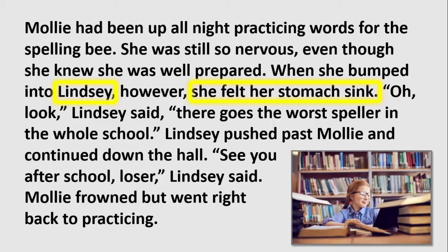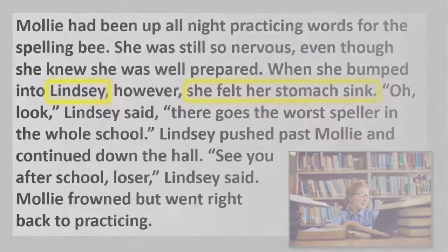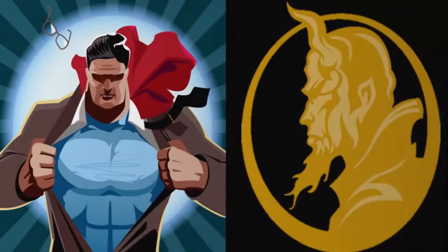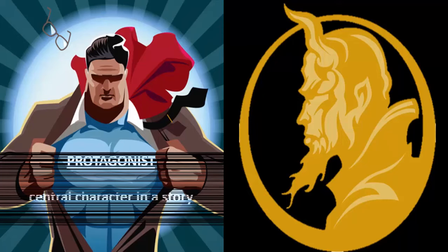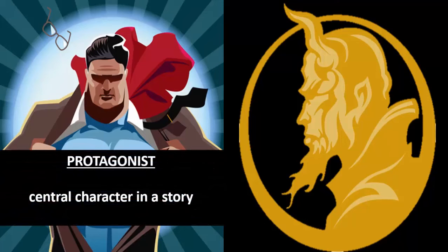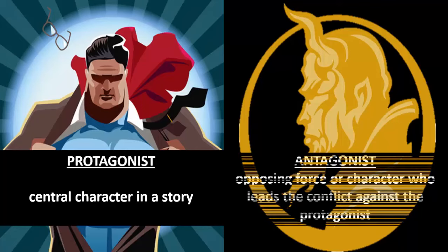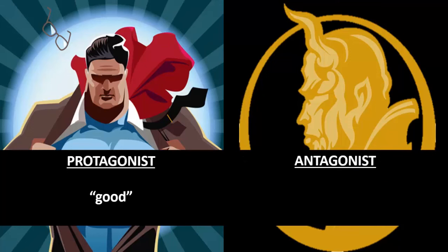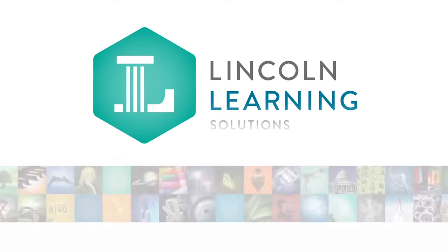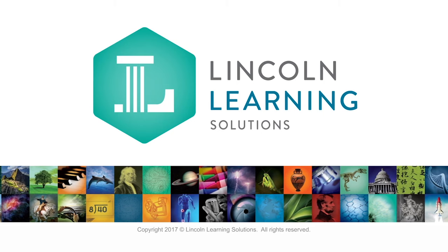In review, when trying to identify the protagonist and antagonist in a story, think about which character is central to the plot. The central character is the protagonist. The character or force that is acting against the central character is the antagonist — the opposing force or character who leads the conflict against the protagonist. In most cases, the good character is the protagonist and the bad character is the antagonist. Thank you for participating in protagonist and antagonist.